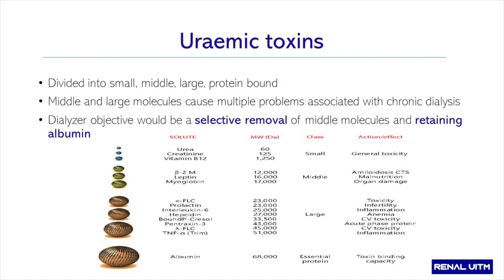The retention of these middle molecules is associated with the development of inflammatory conditions, cardiovascular disease, chronic CKD-mineral bone disease, anemia. It can affect your immune system, causes amyloidosis, and causes protein energy wasting. Therefore, a better clearance of these middle molecules would improve the long-term outcomes of patients with end-stage renal failure.